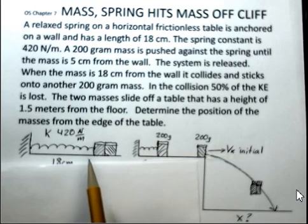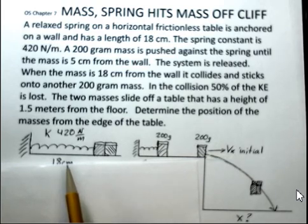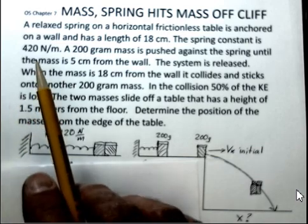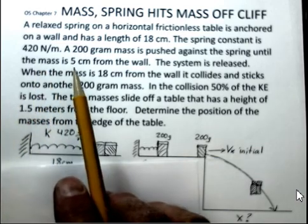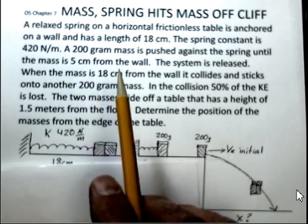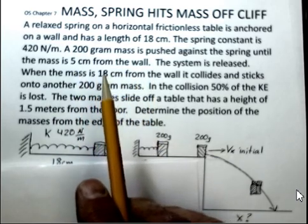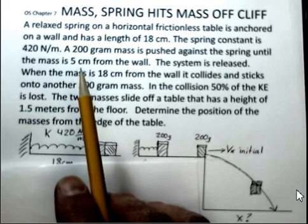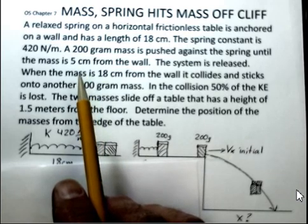The spring has originally a length of 18 centimeters. The spring constant is 420 newtons per meter. The mass that's being pushed against the spring is 200 grams. And this spring is compressed until the mass is just 5 centimeters from the wall.